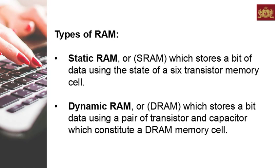Types of RAM: Static RAM, which stores a bit of data using the state of a six-transistor memory cell. Dynamic RAM, which stores a bit of data using a pair of transistors and a capacitor which constitute a DRAM memory cell.